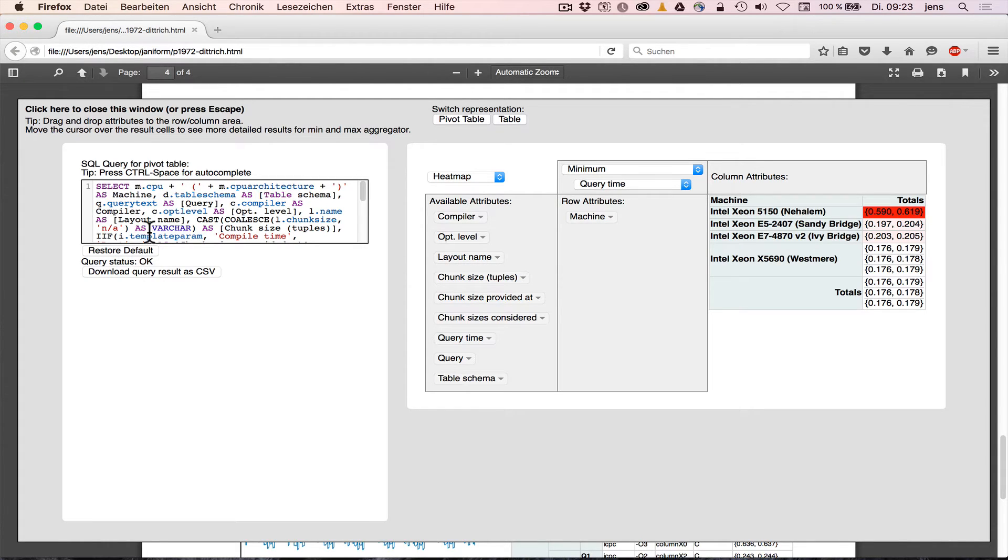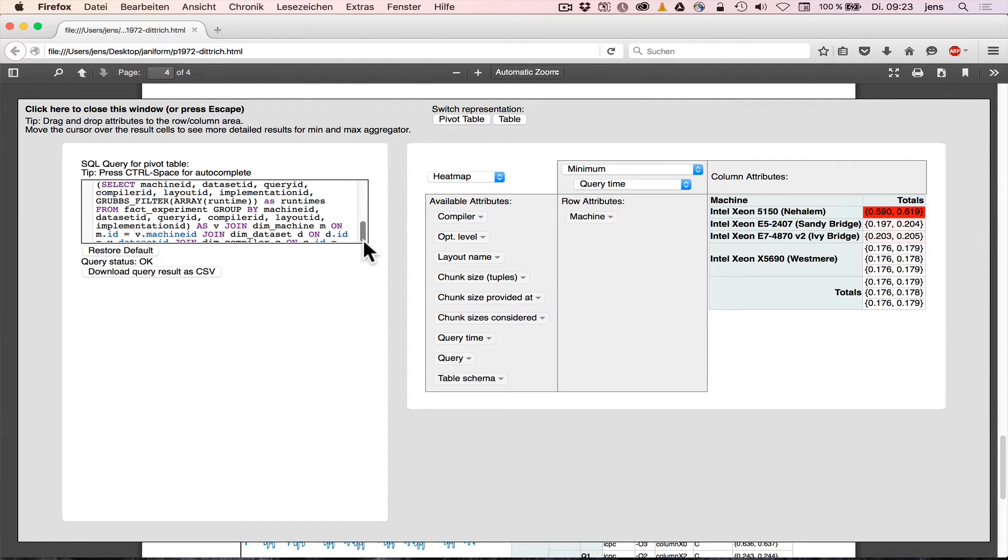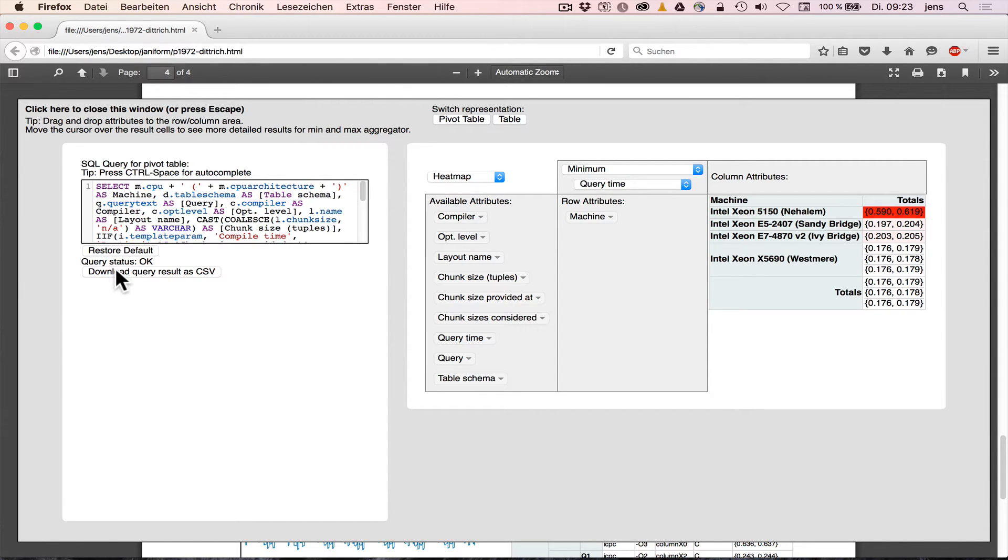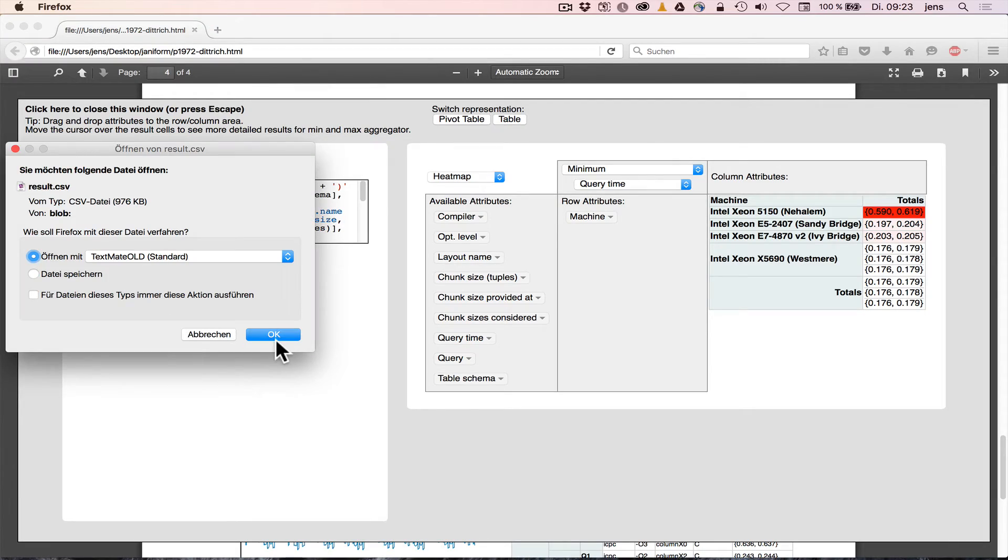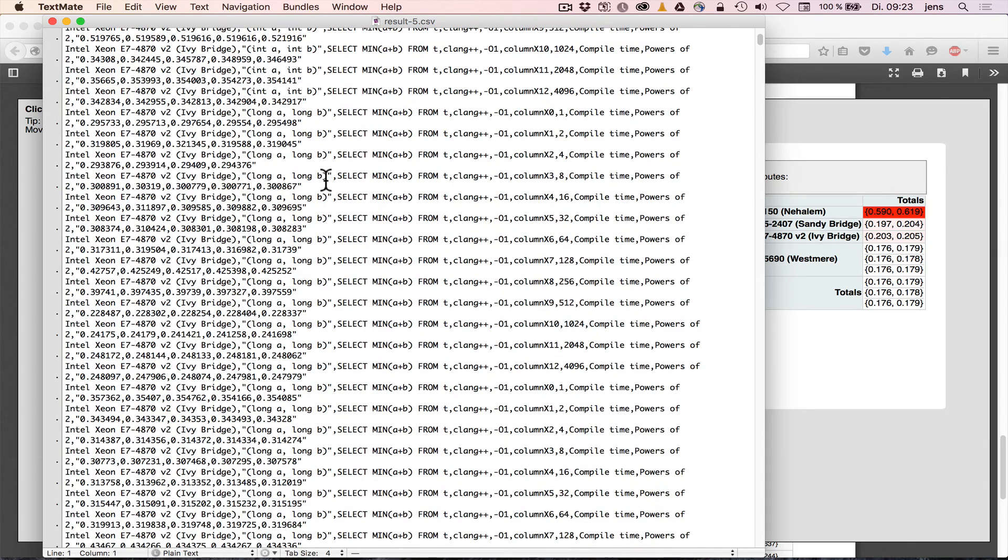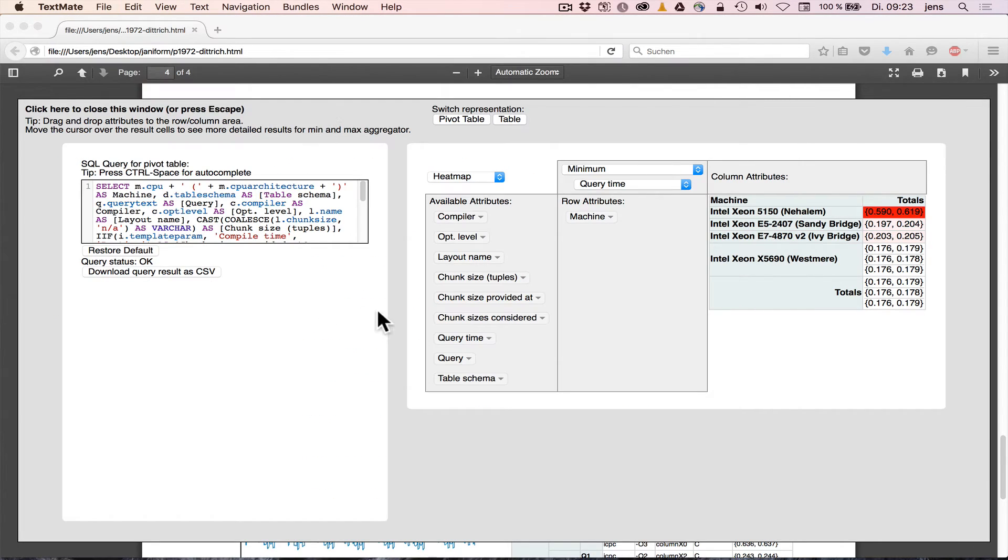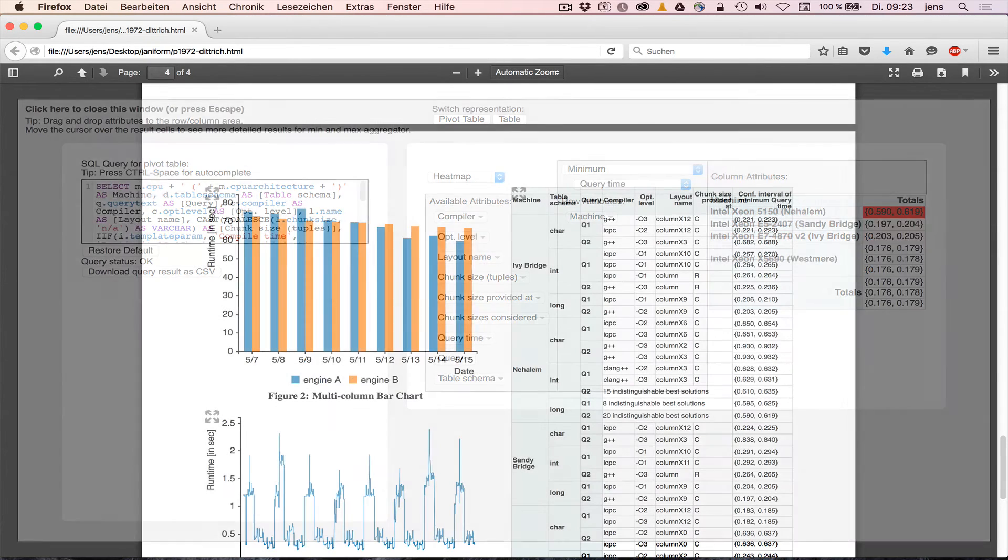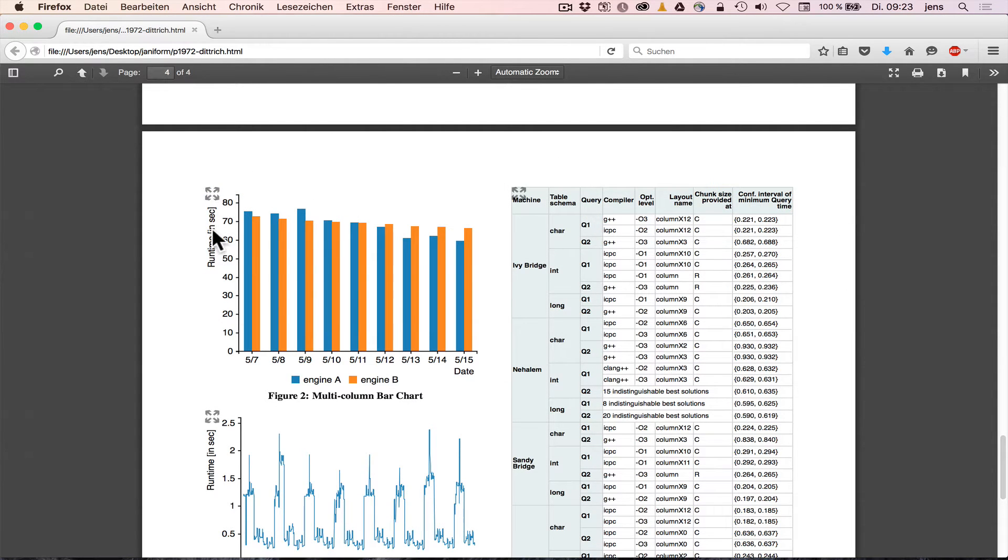And so forth. So here you can see the query that's used to query the internal database. You can download the query result as a CSV file. Downloading means from within the paper, of course. It's not from a server. It's from within the paper. This is downloaded to your desktop or here opens some text document with the data which you can then use for further processing in a different tool. So let's close that window.